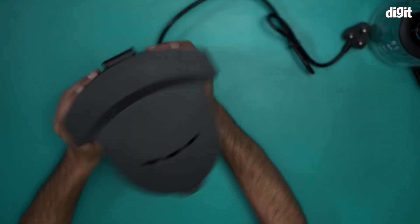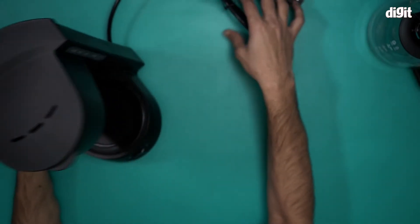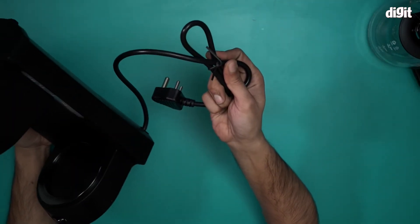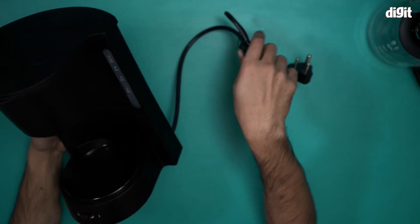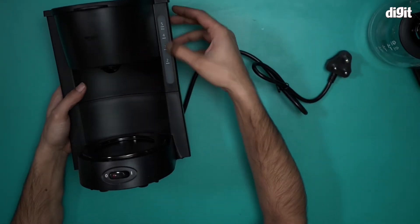And this is the coffee maker in question. This comes with this matte black finish and a very sleek design. It has this thick PVC wire with a three pin socket on one end.